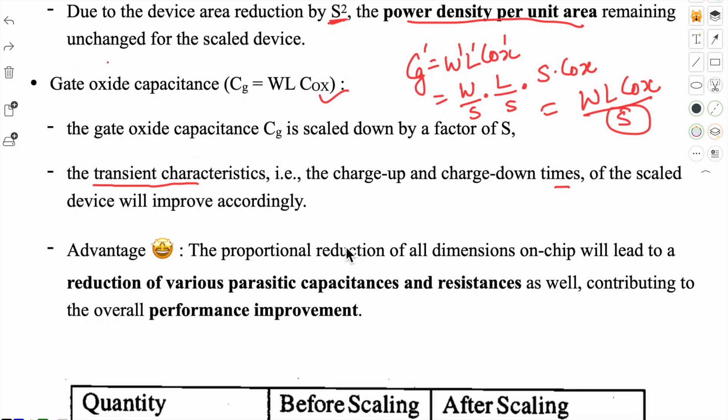The proportional reduction of all dimensions on chip will lead to a reduction of various parasitic capacitances and resistances. When you reduce all dimensions, the parasitic capacitances and resistances will also simultaneously reduce. This will also contribute to the overall performance improvement.